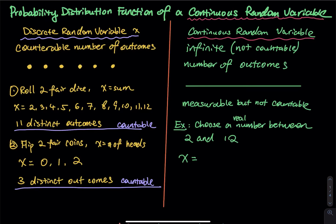Back to the two fair dice problem — the sum. You cannot get a sum between six and seven. You cannot say I want to get a sum of 6.9; that is impossible. Either six or seven, nothing between them. You can use your fingers to count that there are 11 distinct outcomes. You can count means discrete.